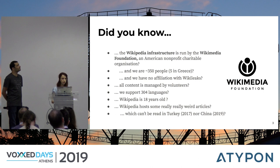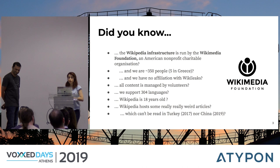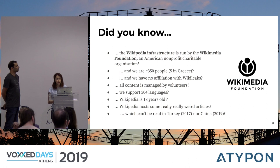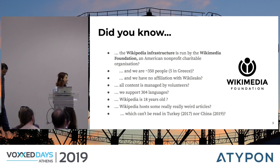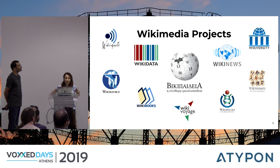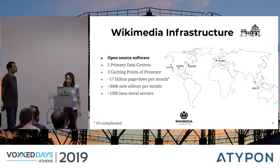Did you know that the Wikipedia infrastructure is run by the Wikimedia Foundation, which is a non-profit organization in the United States? We are about 350 people around the world, five of us are in Athens — well, four. We have no affiliation with WikiLeaks, and if you find this funny, we don't. All content is managed by volunteers, our editors. We support 304 languages. The project is about 18 years old, and we host some really bizarre articles like list of unusual deaths and list of helicopter escapes. Unfortunately, those articles along with a million others can't be read in Turkey and China, meaning about 1.5 billion people don't have access to Wikipedia. Apart from Wikipedia, the Wikimedia Foundation hosts other projects like Wikiquote, Wikiversity, Wikinews, and Wikidata, which is run by Wikimedia Deutschland.